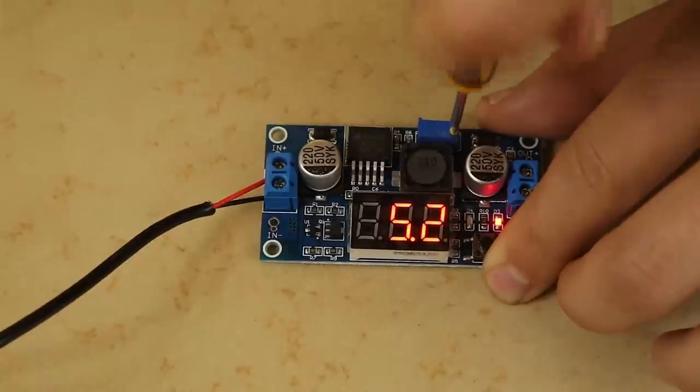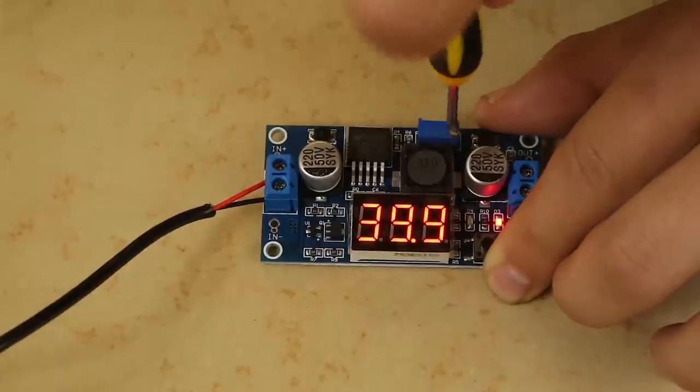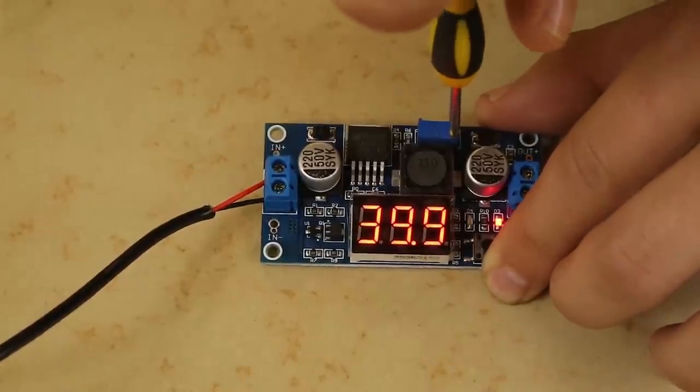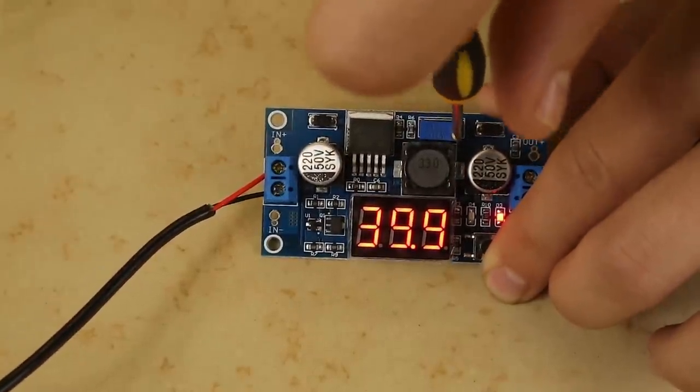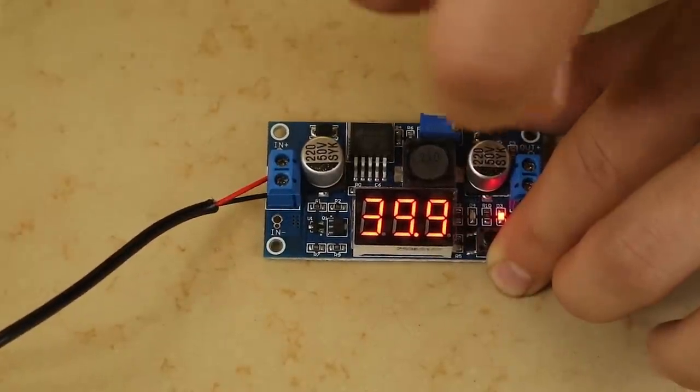And if we want we can crank it all the way up to about 40 volts or so, that is the maximum that this can handle. So 39.9 as you can see right there, the maximum output voltage this can do is about 40 volts. So that's our range, 5 to 40.